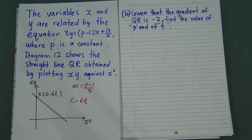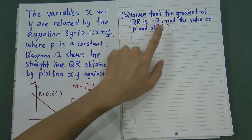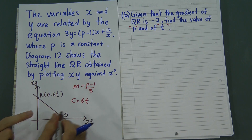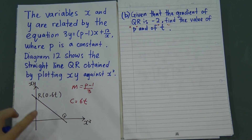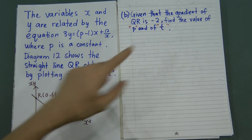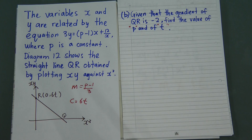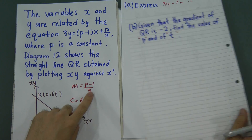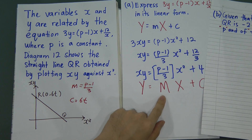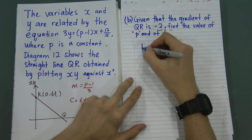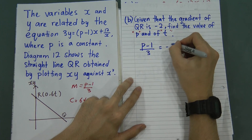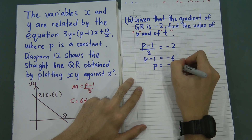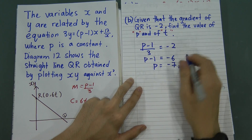For Part B: the gradient of QR is given as negative 2. Since the gradient is m = (p−1)/3, we set (p−1)/3 = −2. Solving: p−1 = −6, therefore p = −7.